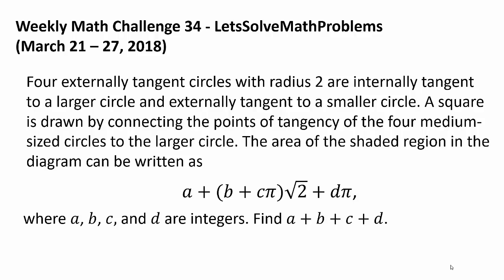The area of the shaded region in the diagram can be written as a + (b + cπ)√2 + dπ, where a, b, c, and d are integers. Find a + b + c + d.